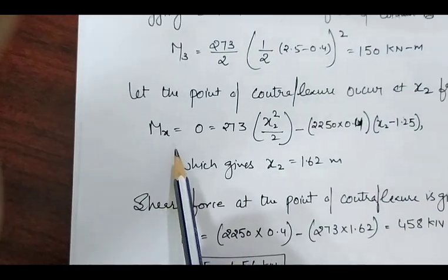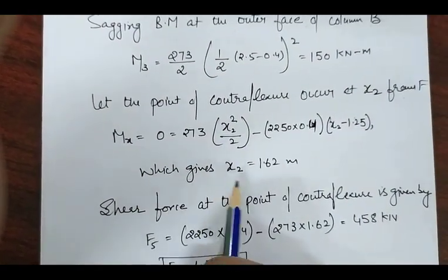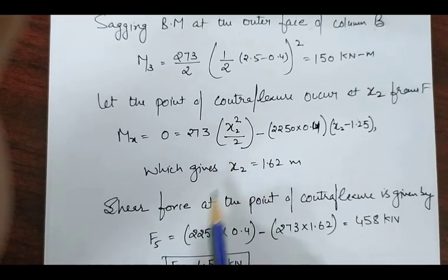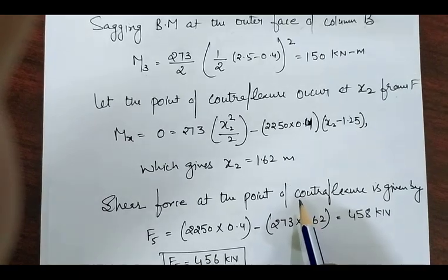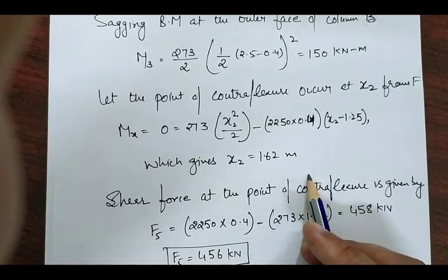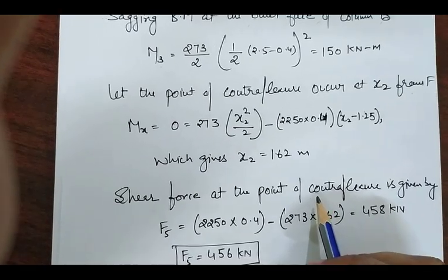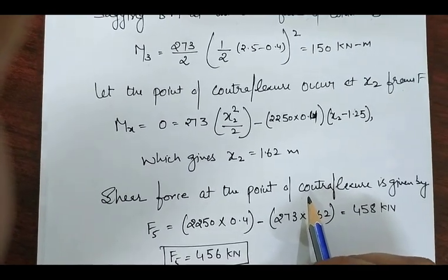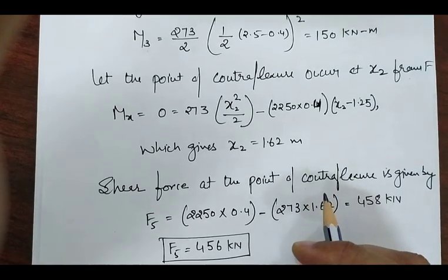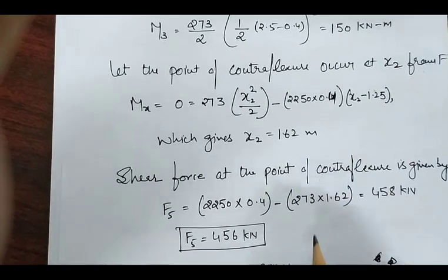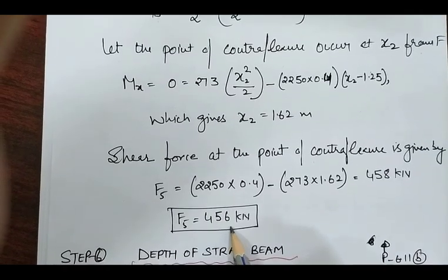Considering the bending moment calculation, the value of x2 is 1.62 meters. At the point of contraflexure, the bending moment is zero and the shear force is maximum. The final shear force F5 at this point is equal to 5456 kilonewton.